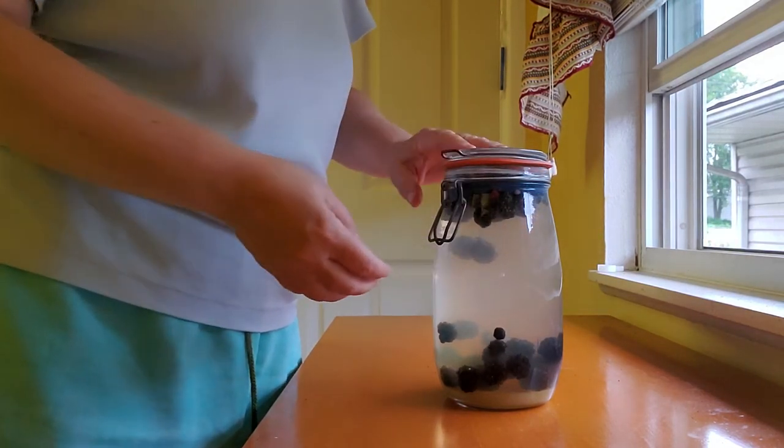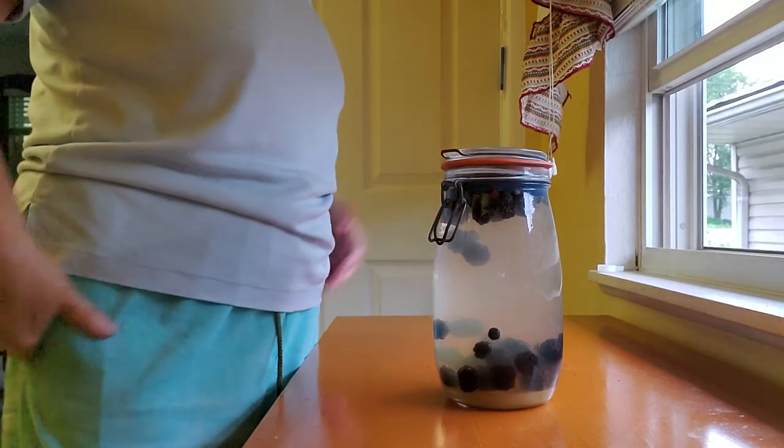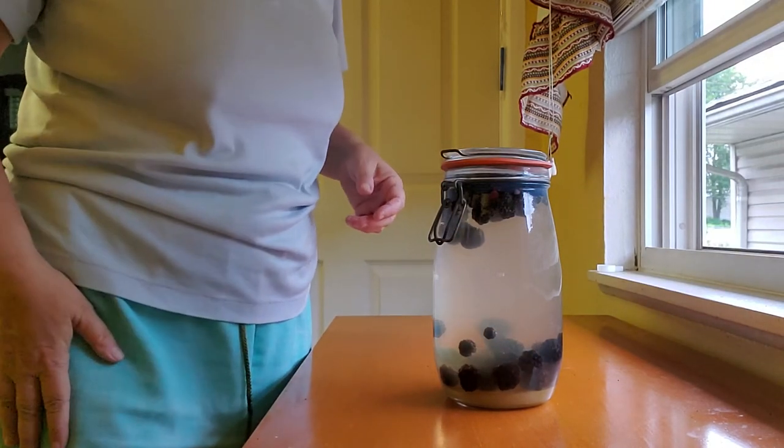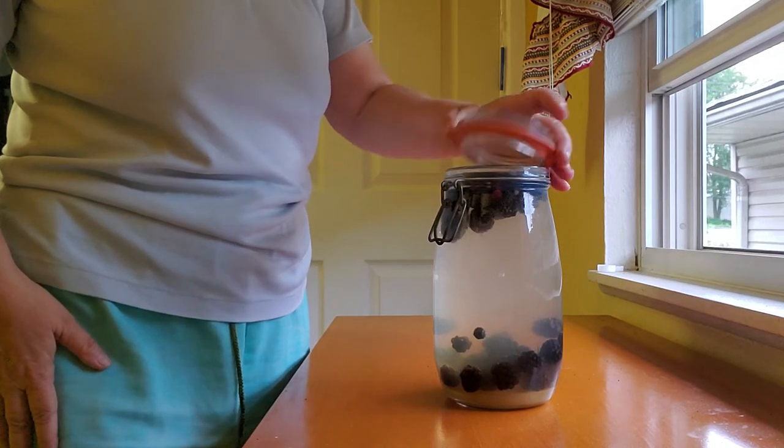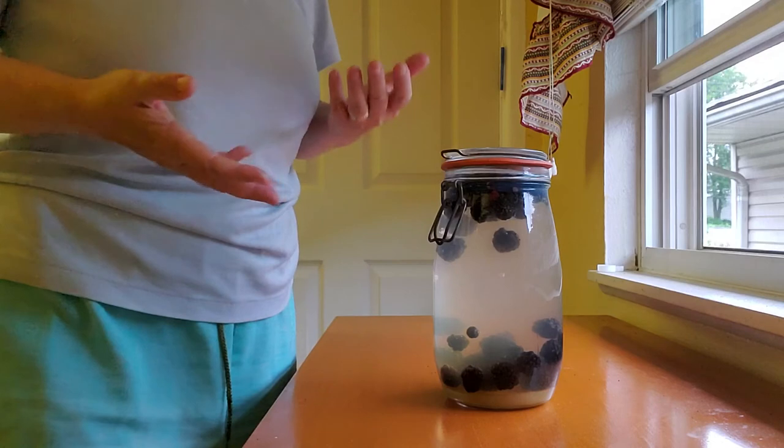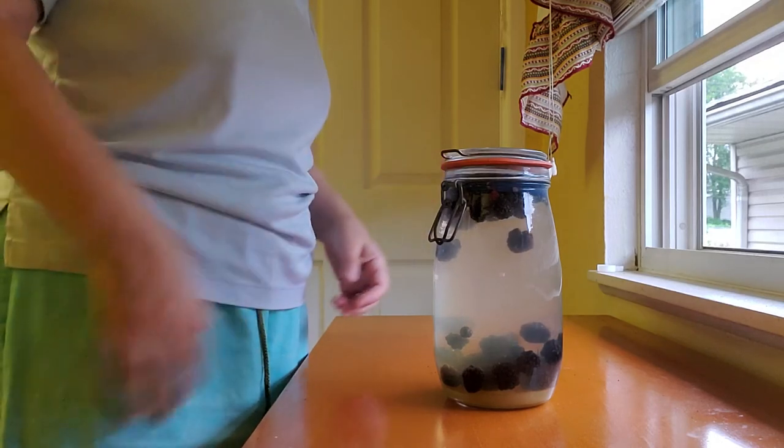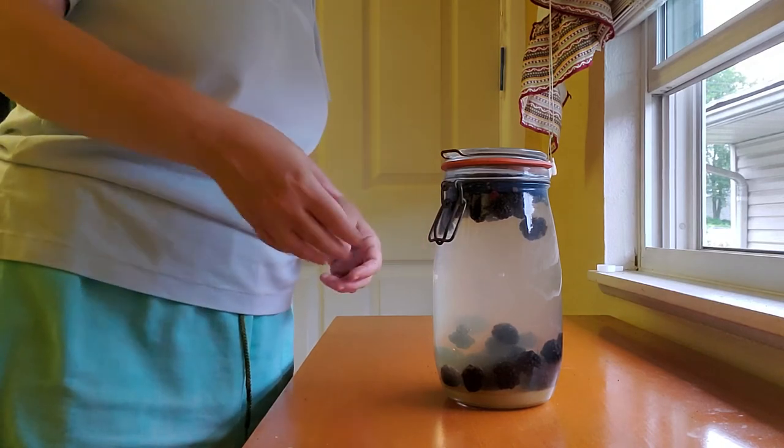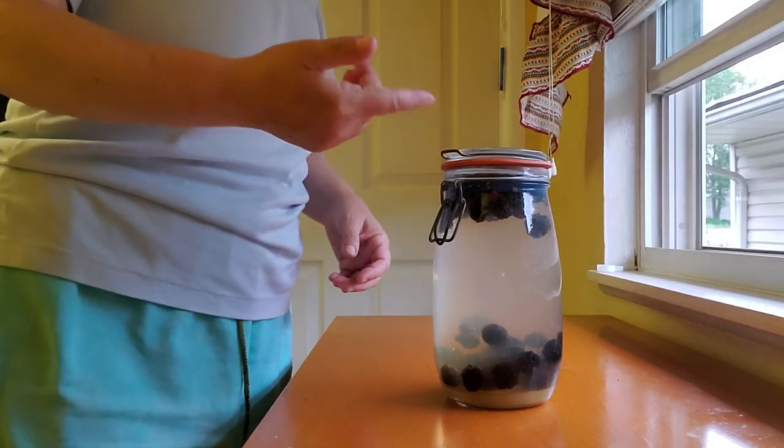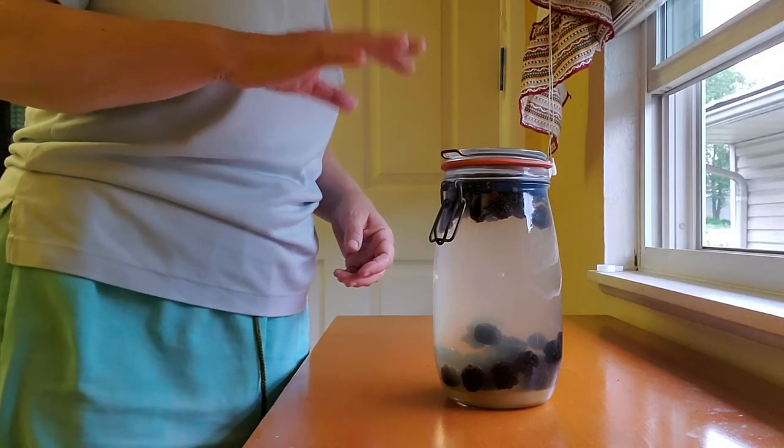And I just cover it with the flip top and that keeps out any bugs that might be around, flies. I'm not going to lock it so that there can be air exchange if there's some release from the fermentation. I'm not going to hold that in, I want it to start bubbling. And then I'll just leave it like that on the counter.